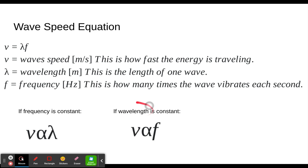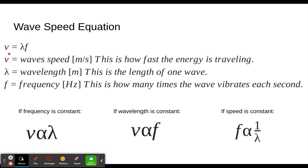Second, if wavelength is constant, speed and frequency are directly proportional — if frequency doubles, speed doubles. Finally, if speed is held constant, frequency is inversely proportional to wavelength. So if speed is constant and frequency doubles, the wavelength gets cut in half; if wavelength is cut in half, frequency doubles — they go in opposite directions by the same factor.